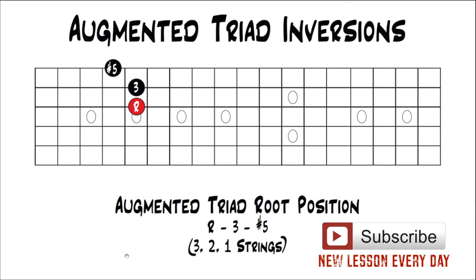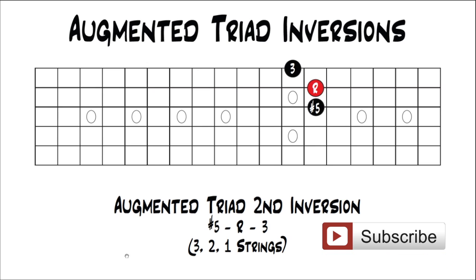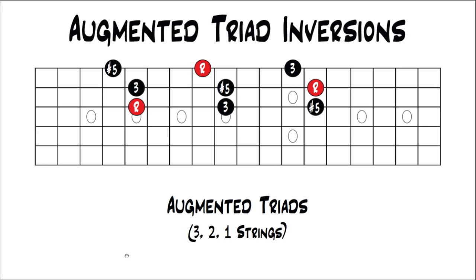Then your last set of strings: root position, up a major third — first inversion, up a major third — second inversion. And there are all of those on the same string set. So even though augmented technically works the same way as the other inversions — the intervals just move up to the next closest interval — I wanted to go over augmented specifically since it's symmetrical, and when you move up to the next closest interval the shape just stays the same. It's because the distance between every single one of these notes is a major third apart: root to 3 is a major third, 3 to sharp 5 is a major third, sharp 5 to root is a major third. That's why your shape stays the same as you move up the fretboard.